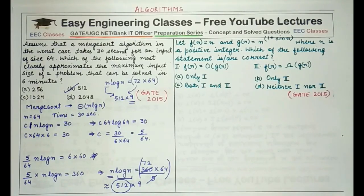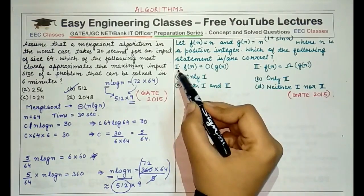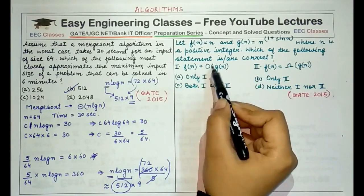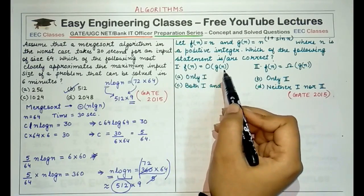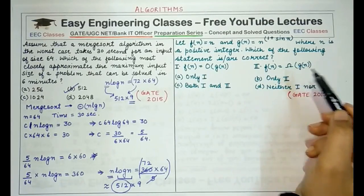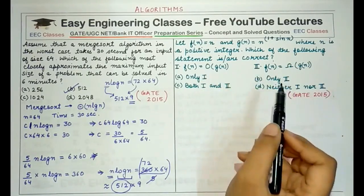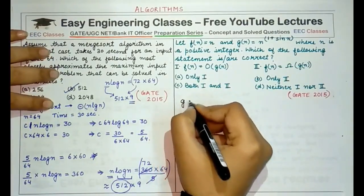The next question: let f(n) = n and g(n) = n^(1 + sin n), where n is a positive integer. Which of the following statements is correct? Statement 1: f(n) = O(g(n)), meaning f is upper bounded by g. Statement 2: f(n) = Ω(g(n)), meaning f is lower bounded by g.